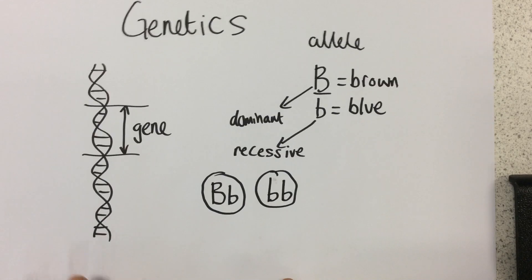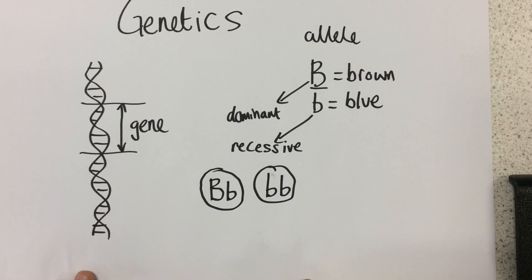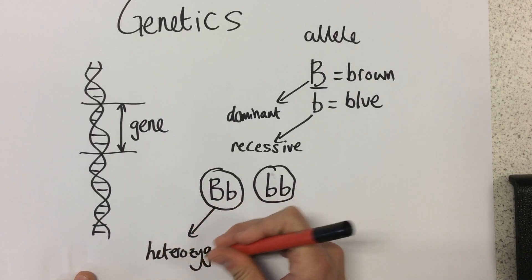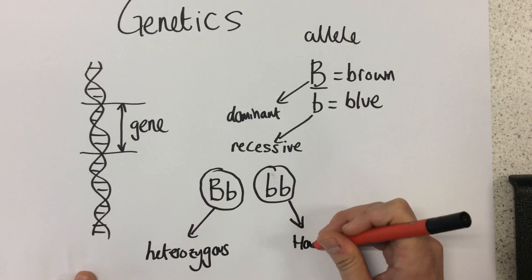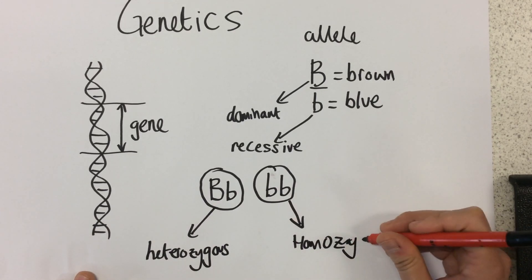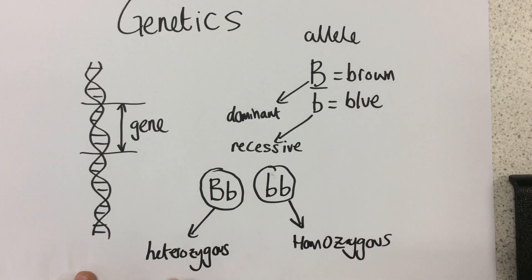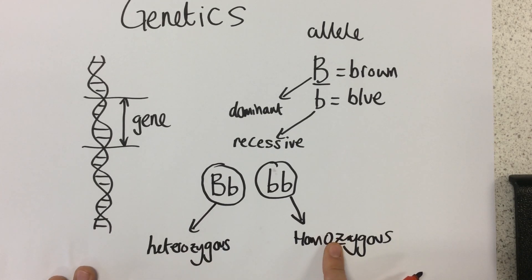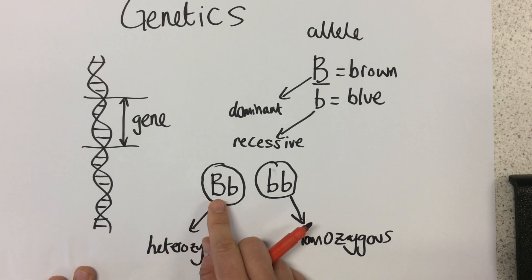Now, another term we need to know, or two terms rather, are heterozygous and homozygous. Now, the way that I always remember this is this. I think of heterosexual relationships and homosexual relationships. Heterosexual relationships are between a man and a woman. So it's people of different sex. And so heterozygous genotype means that you have different alleles, one dominant and one recessive.